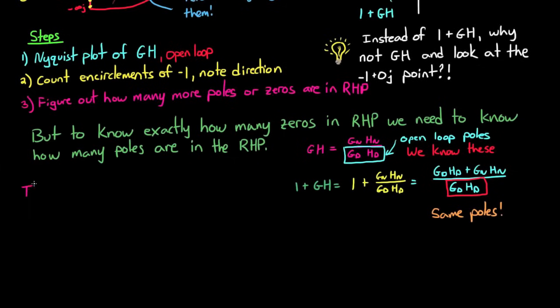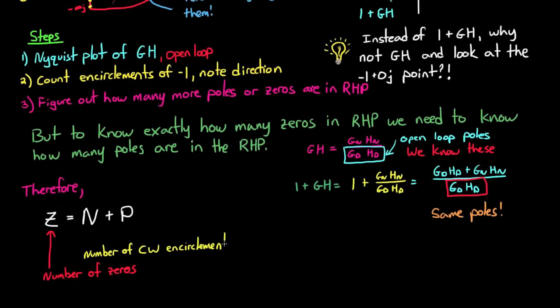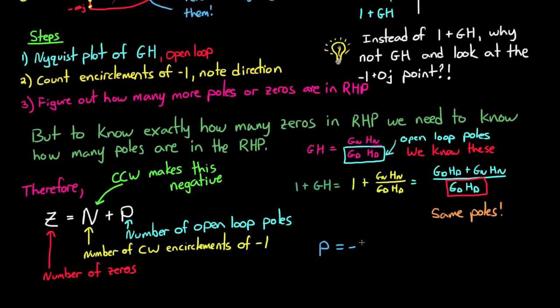And this drives the famous equation that the number of zeros in the right half plane, Z, is equal to the number of clockwise encirclements of minus 1 plus the number of open-loop right half plane poles. Or another way of saying this is that in order to guarantee there are no zeros in the right half plane, then you better have exactly one counter-clockwise encirclement for every open-loop pole in the right half plane.